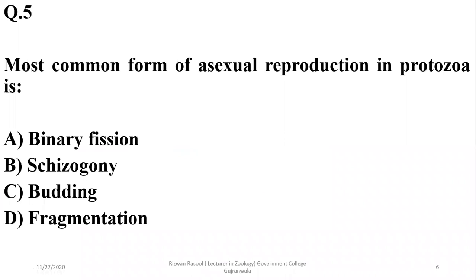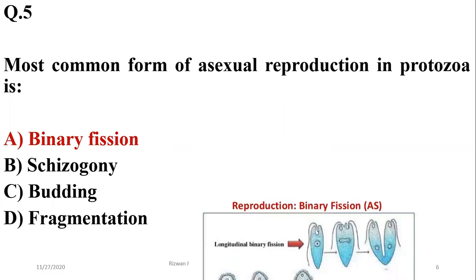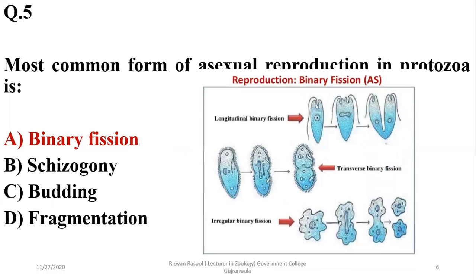Question five: the most common form of asexual reproduction in Protozoa is binary fission. Other types such as schizogony, multiple fission, budding, and fragmentation are also observed, but binary fission is more common compared to other types.